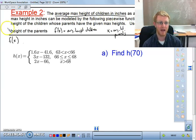So it says, find the average max height of the children whose parents have the given max heights. So it says use h(x) where x is the max height of the parents. So it tells you right there, but it's not always going to tell you that. So here we have find h(70). So what does that mean?